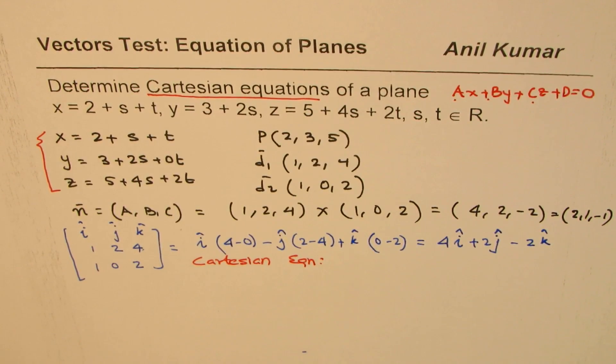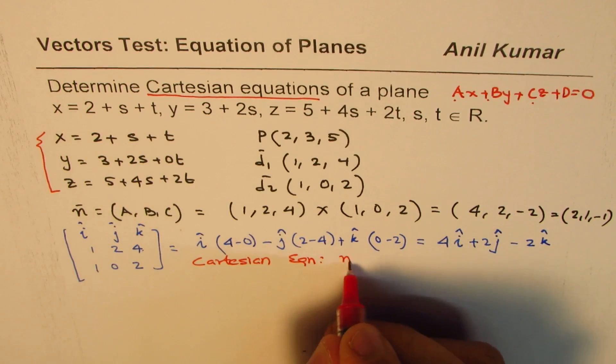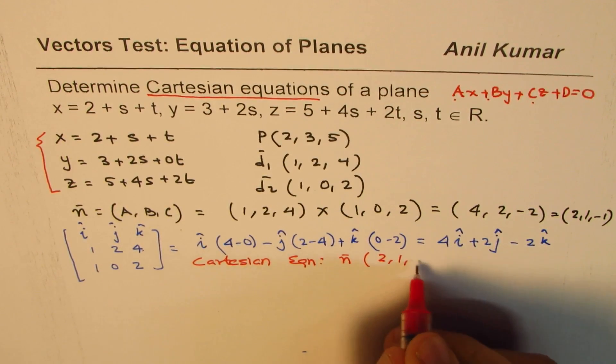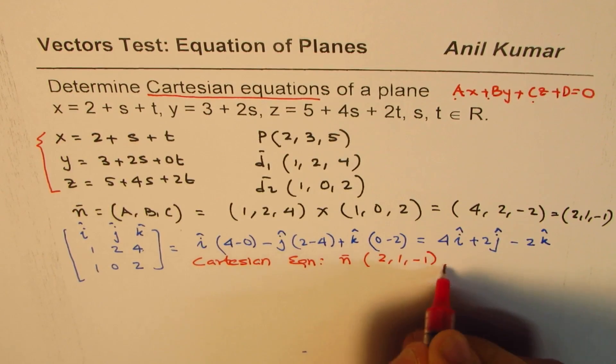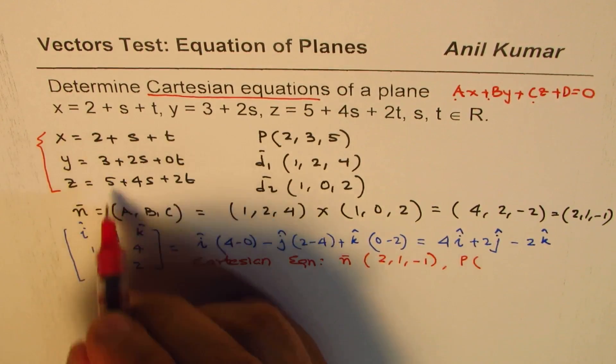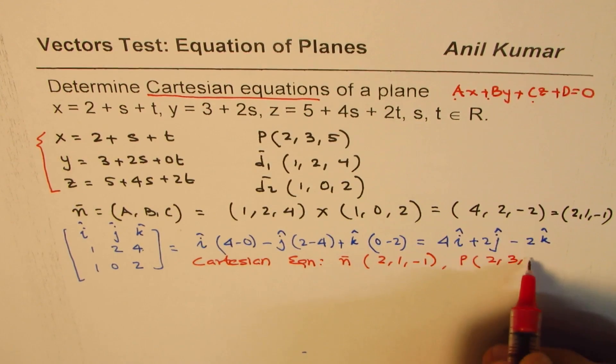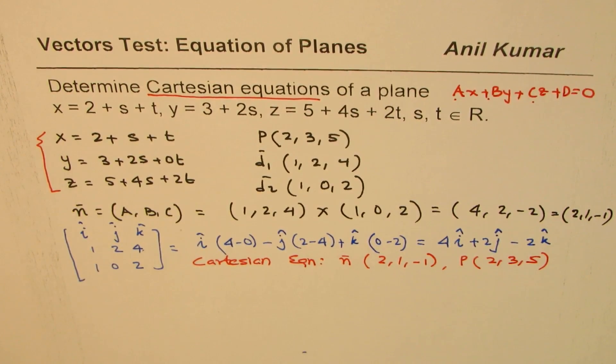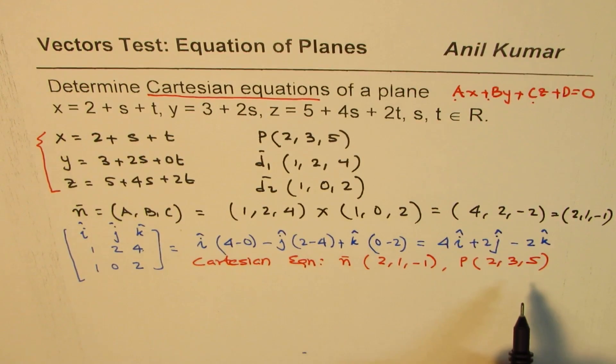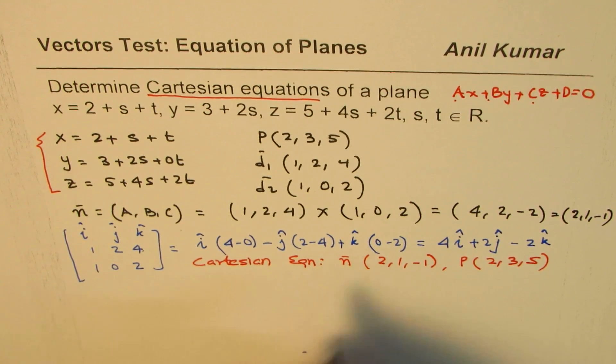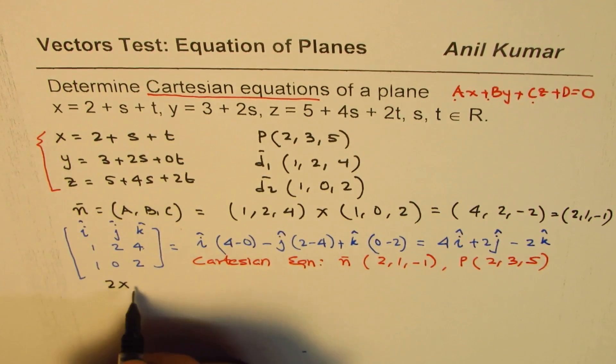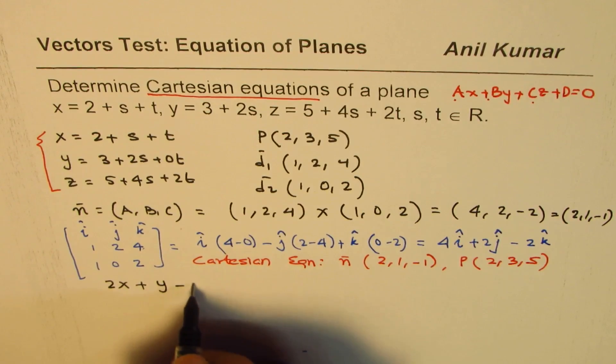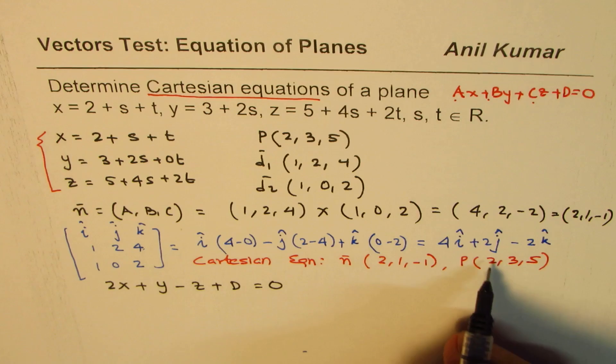What we know is that the normal vector is (2, 1, -1) and the point P is (2, 3, 5). You can pause the video and do this on your own. The equation becomes 2x + y - z + D = 0.